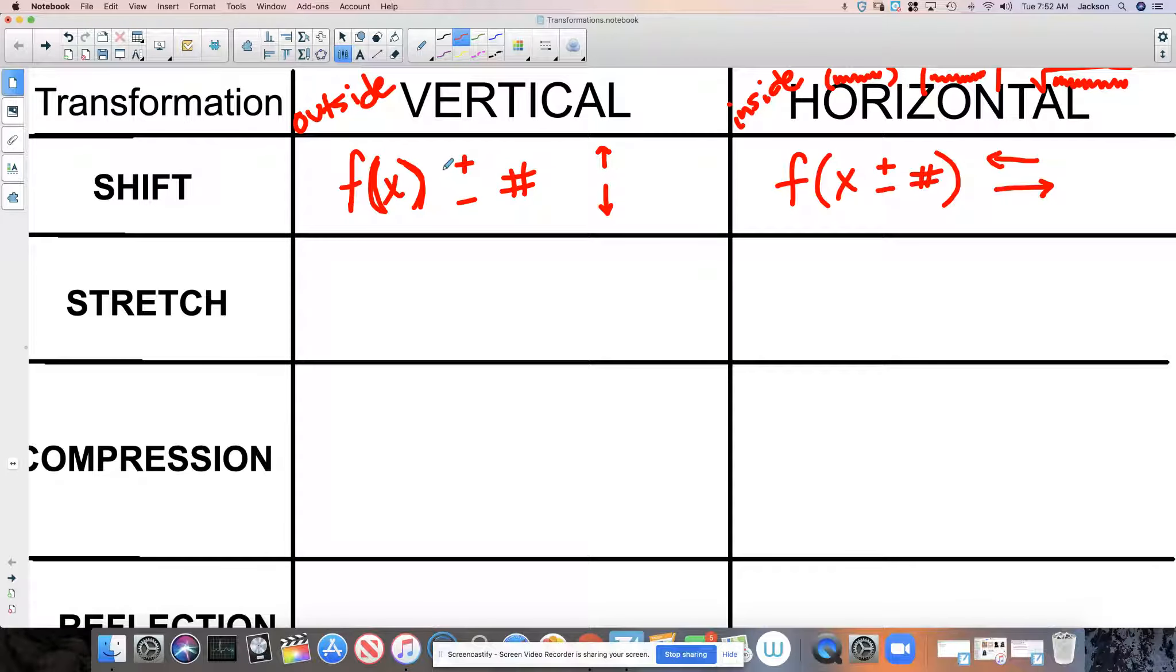In a previous video, we talked about shifting our graphs vertically or horizontally. Any vertical transformation that we see in function notation will be outside the original function. Any horizontal transformation will be inside.